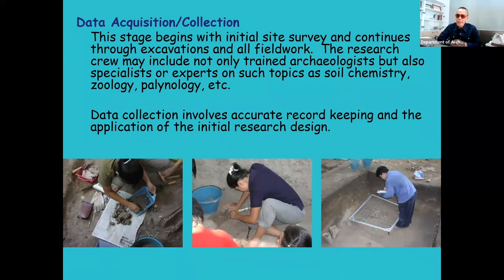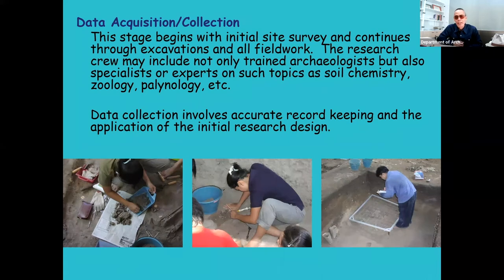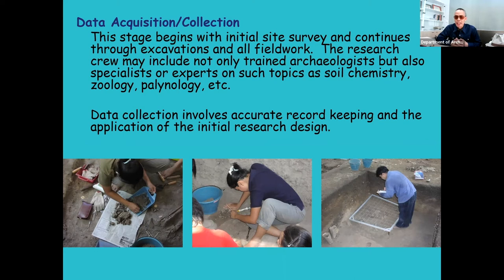For example, if you do field walking, you want to get data about the size of your site. You can use different survey techniques to get the size of your research area. Without the need to do excavations — but sometimes, or most of the time, some data that are crucial to your research question are below the soil, below the surface. Then you need to do excavation or digging. To do this, you need trained or experienced crew members, and experts that might join and work with you in this multidisciplinary type of research — like zoology, palynology, soil chemistry, et cetera.